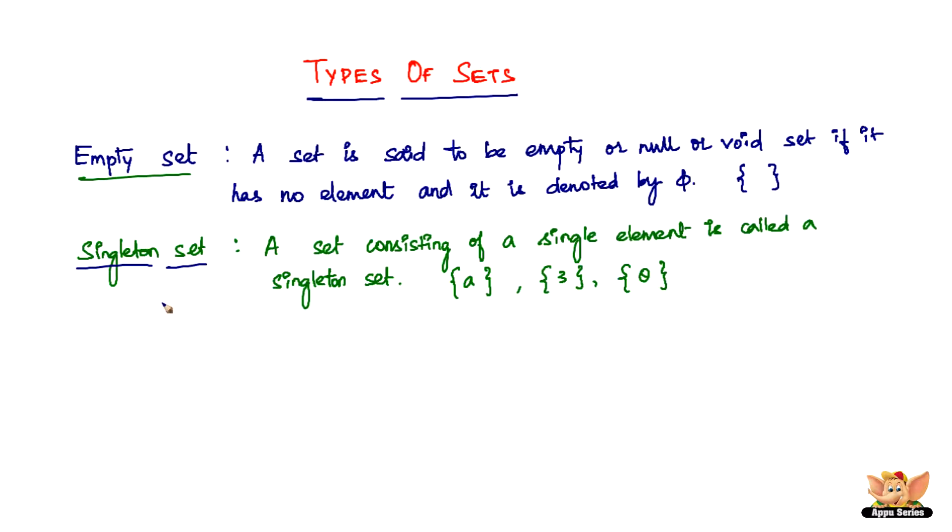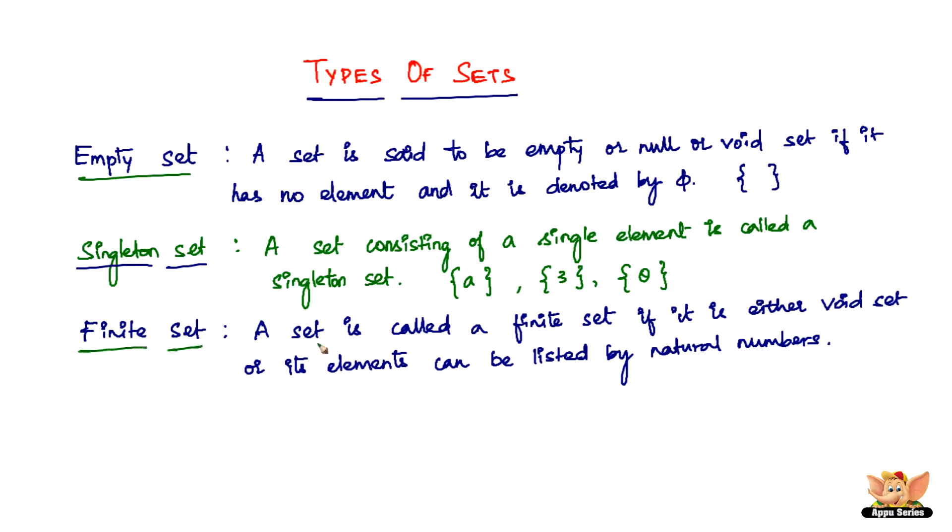So let's go to the next type of set now. The next kind of a set is a finite set. A set is called a finite set if it is either void set or its elements can be listed by natural numbers, or rather you can even replace the word listed by counted by natural numbers.